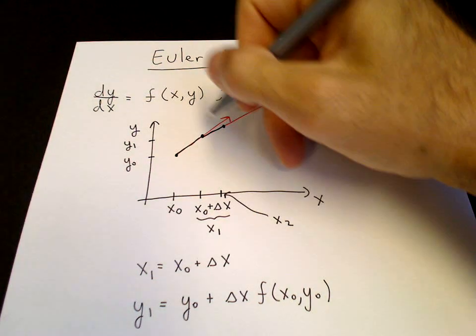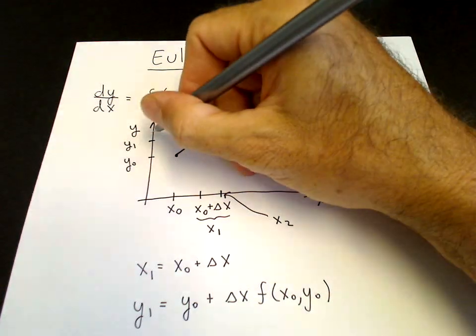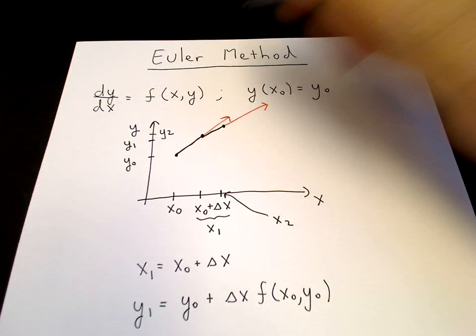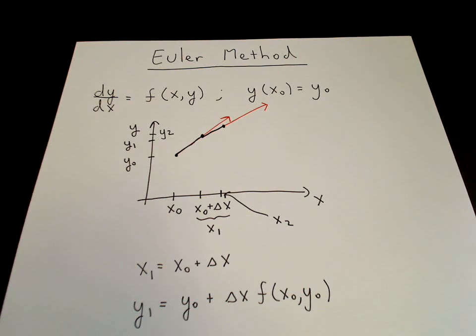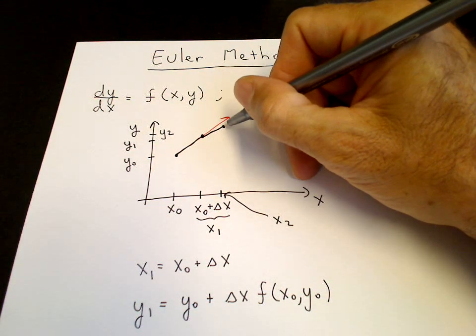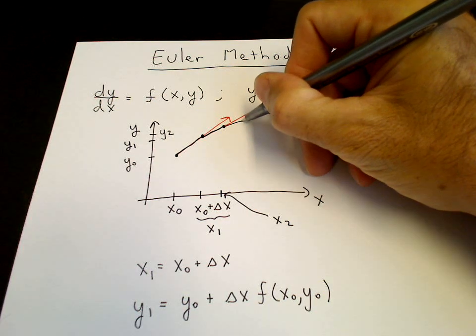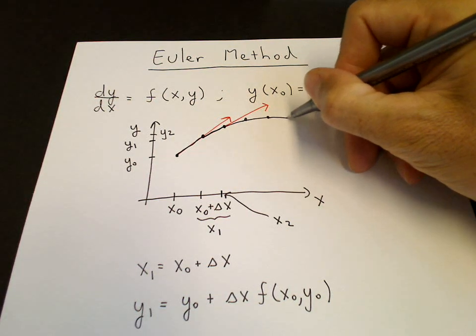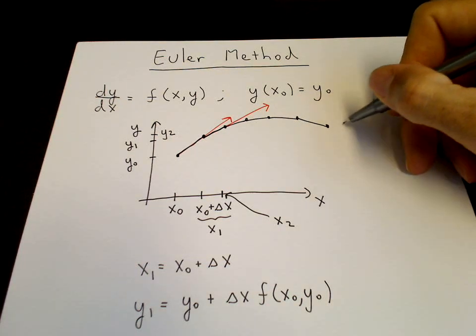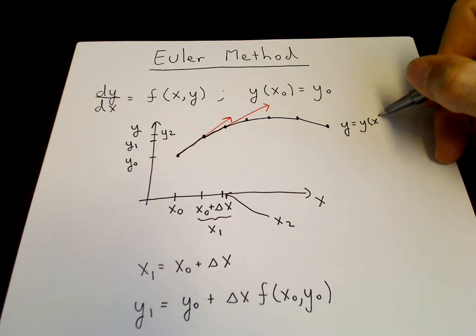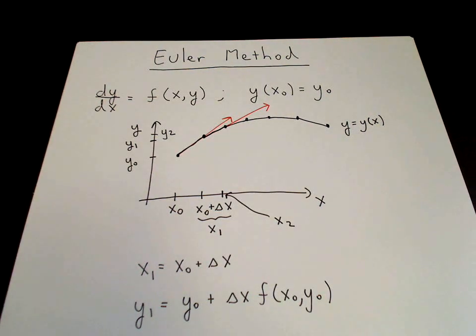And this value here becomes y₂. And so on. So that becomes our new initial condition. We can then construct various line sections, line segments. And this would be our approximation to y equals y of x.